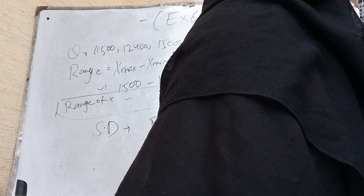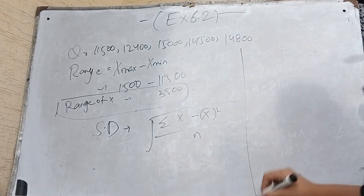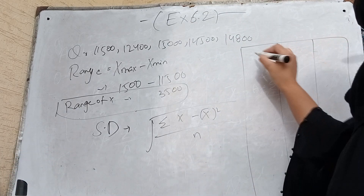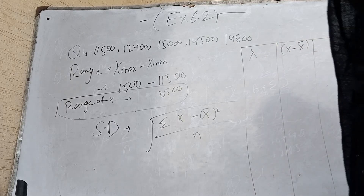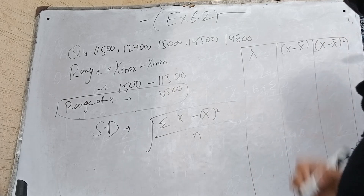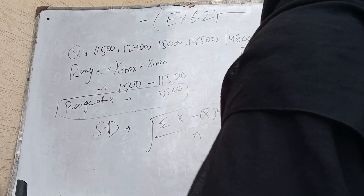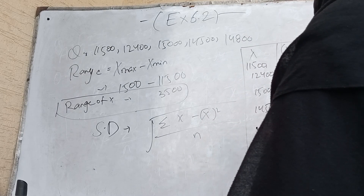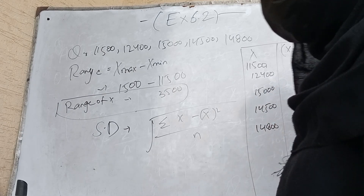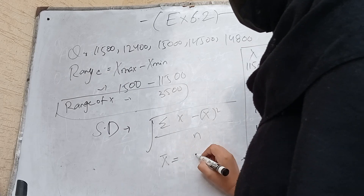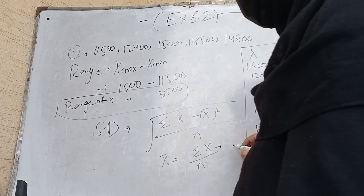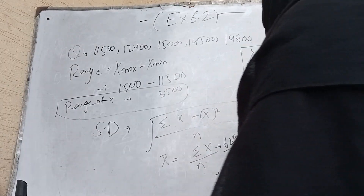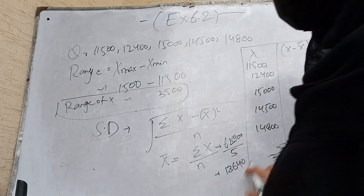Next we find standard deviation. The formula is: σ = √[Σ(x − x̄)² / n]. We set up columns for x, (x − x̄), and (x − x̄)². The data values are 11,500; 12,400; 15,000; 14,500; and 14,800. First we find x̄ = 62,800 / 5 = 12,560... wait, the computed x̄ = 13,640. So (x − x̄): 11,500 − 13,640 = −2,140.